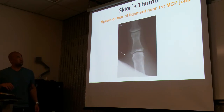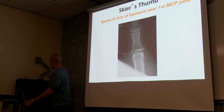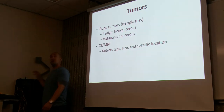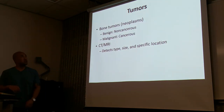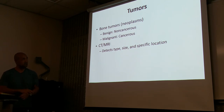Skier's thumb — sprain or tear of the ligament near the first metacarpal. This is related to the Bennett's fracture discussed earlier. Bone tumors — new growths are called neoplasms. They can be benign, which is non-cancerous, or malignant, which are cancerous.